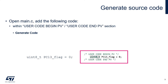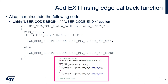We can then generate the code by saving the project. We'll add a variable called PC13_flag initialized to zero. We'll also add a callback function for EXTI rising interrupts. In this function, we will increment the PC13_flag by one, and depending on its value, we will turn the LED on or off.